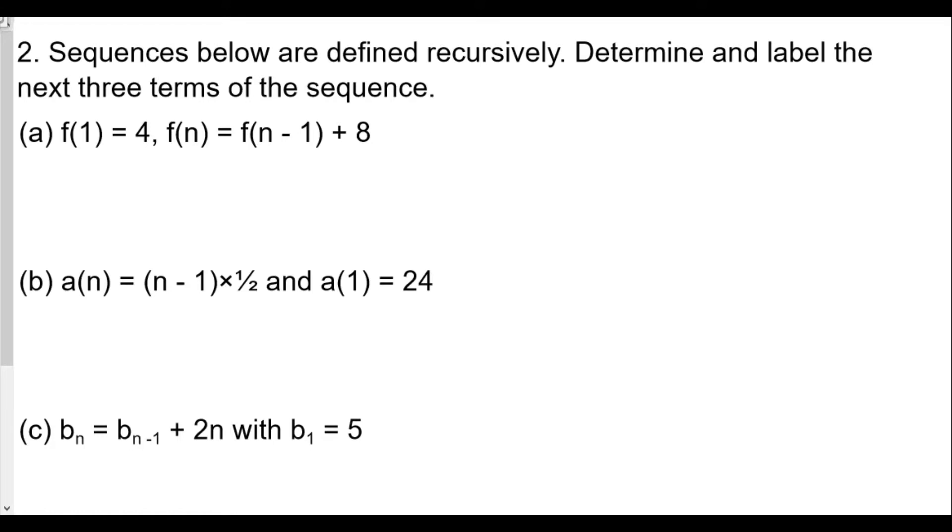So let's start off with A. F1 equals 4, so we know that's our first term. So we want to find our next term, F2. F2, since n is 2, is really going to be defined as F(2-1) plus 8. That would mean in this case that F2 equals F1 plus 8.